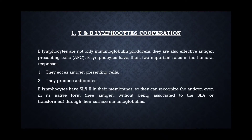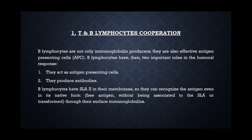First, we discuss about the T and B lymphocyte cooperation. B lymphocytes have two important roles: they act as antigen presenting cells, and they produce antibodies. They have SLA-2 — swine leukocyte antigen class 2 — in their membranes, so they can recognize the antigen even in its native form, meaning in the free form of the antigen.